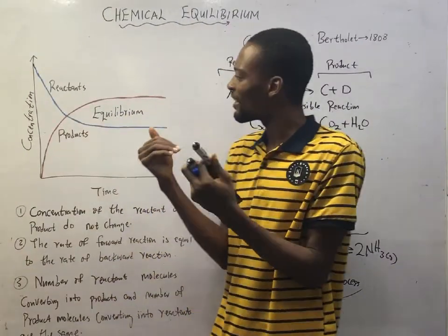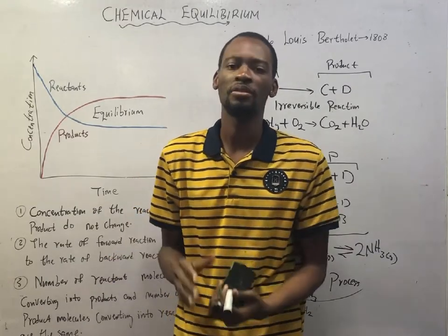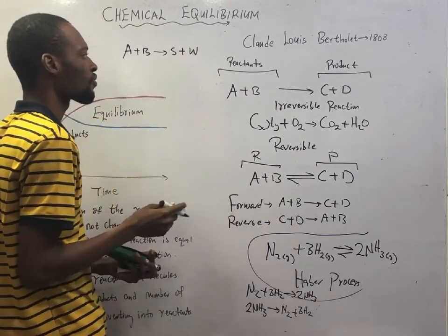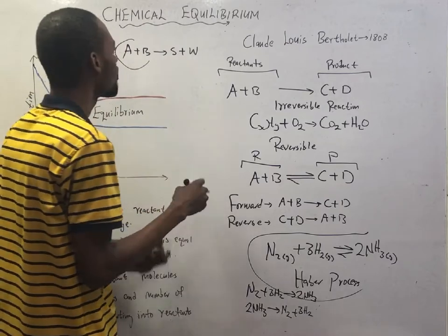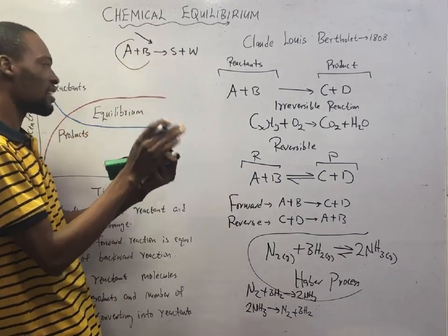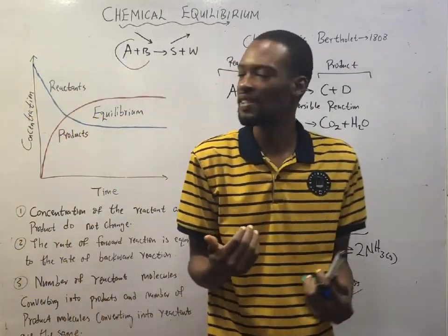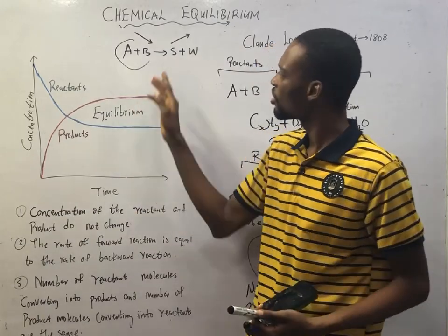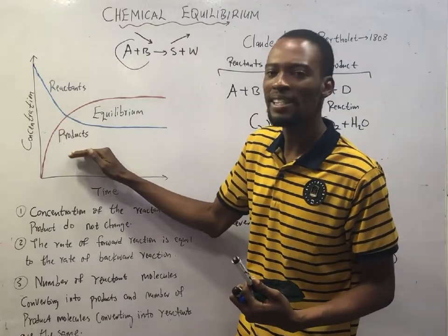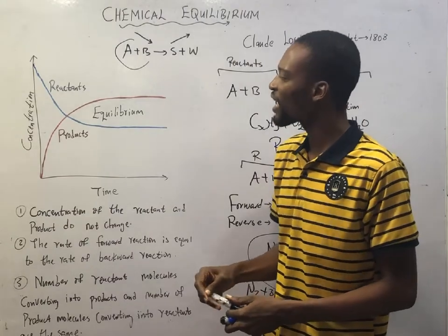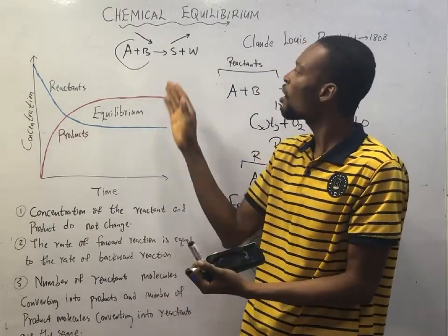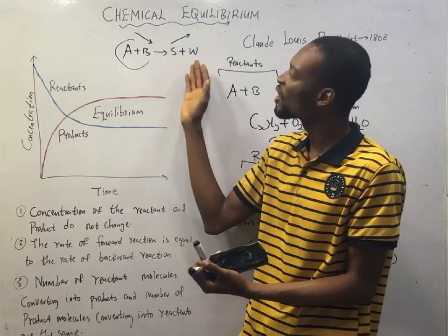Consider an acid reacting with a base to form salt and water — that is a neutralization reaction. For an irreversible reaction, the acid and base keep reacting, reducing the concentration of the reactants and increasing the concentration of the products. In a concentration-time diagram, the reactant starts at full concentration while the product starts at zero. As the reaction proceeds, the concentration of the reactant goes down and the concentration of the product goes up.